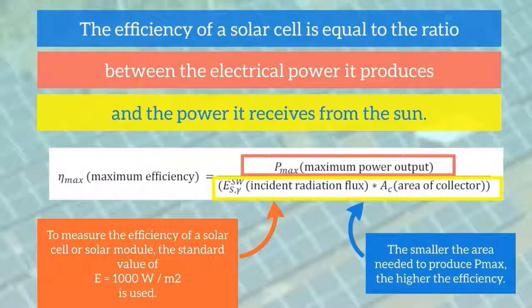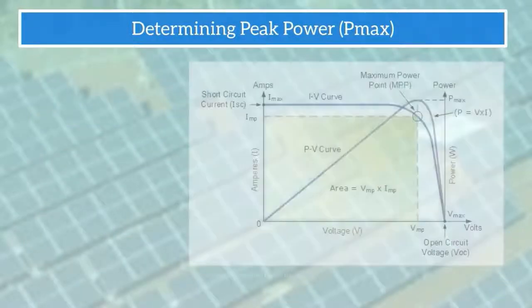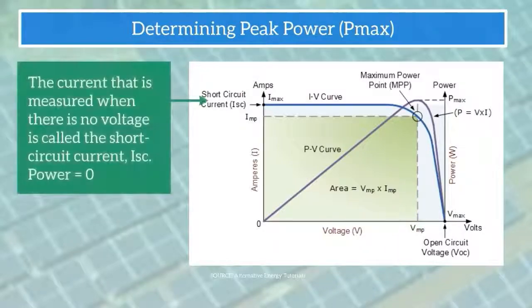So how is Pmax measured? By constructing the IV curve or the current versus voltage curve of the solar cell. The current that is measured when there is no voltage is called the short circuit current or ISC. At this point, power equals zero.